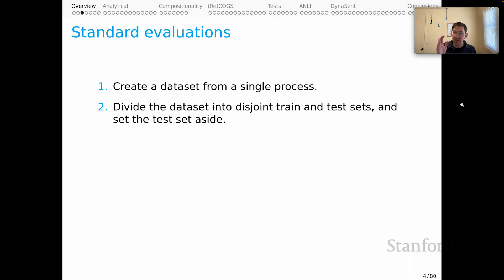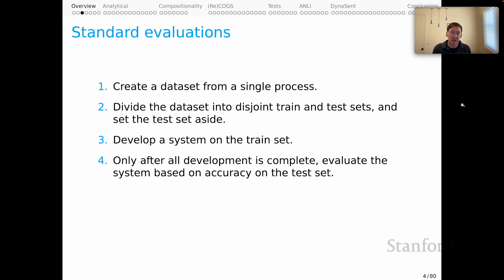And then in the next phase, you divide the dataset into disjoint train and test sets and you set the test set aside. It's under lock and key. You won't look at it until the very end. That's really good because that's going to be our estimate of the capacity of the system to generalize. But notice you've already been very friendly to your system because step one offers you a guarantee that those test examples will in some sense be very much like those that you saw in training. Then you develop your system on the train set. Only after all development is complete, you evaluate the system based on some notion of accuracy standardly on the test set.